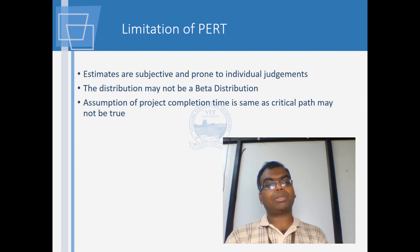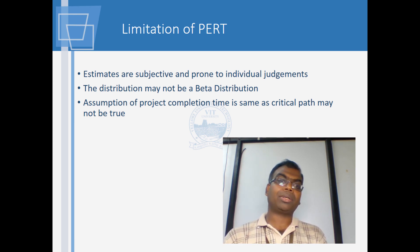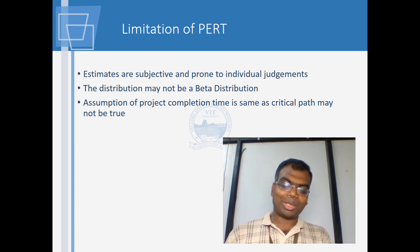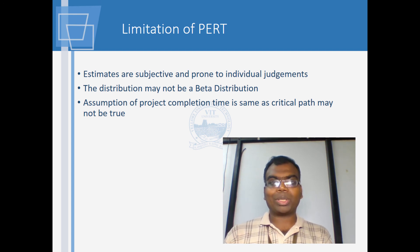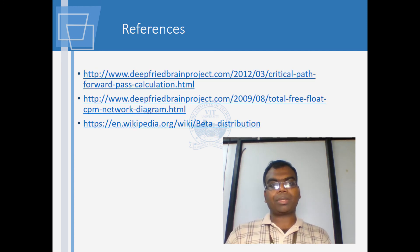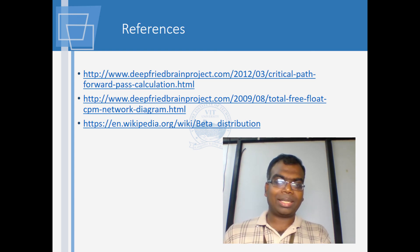Further, the distribution may not be a beta distribution at all — we showed many curves and assumed beta distribution, but there is a good chance it is not. Also, the assumption that project completion time equals critical path time may not always be true, because a non-critical path can become critical due to lack of focus during project execution. Here are some references used in this presentation. Trust you found this useful and all the best.